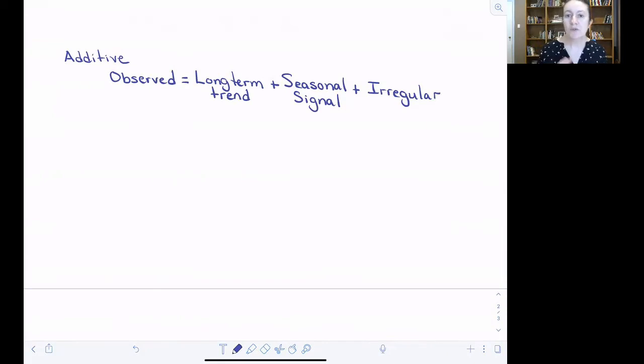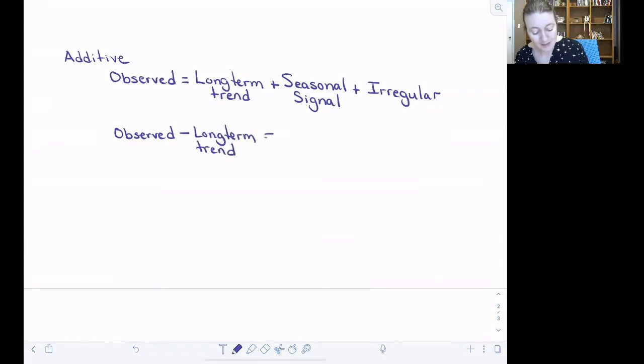What that means is in order to extract our long-term trend and isolate it from the seasonal signal and irregular data, all we have to do is take our observed data and subtract out the value that we calculated from the long-term trend, just like we discussed with the CO2 data. And that will leave us with a combination of our seasonal signal plus our irregular data.